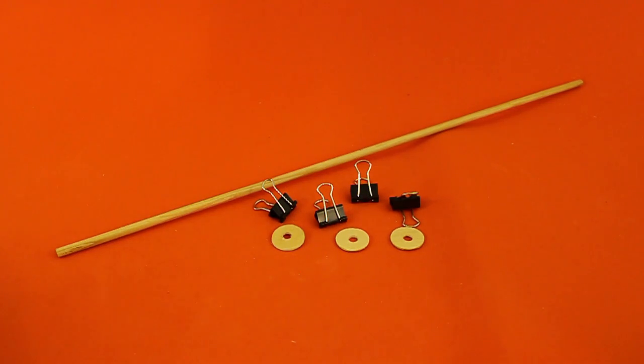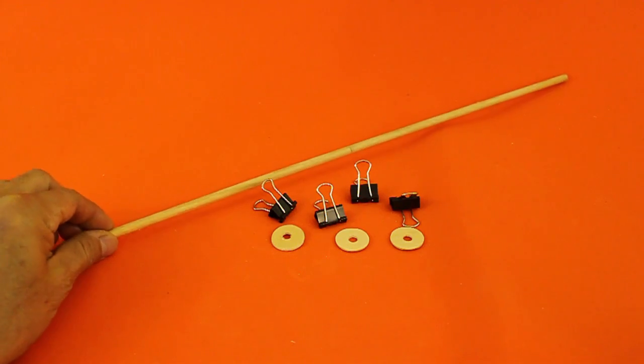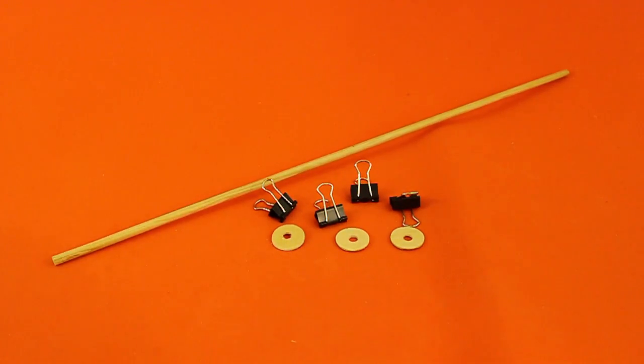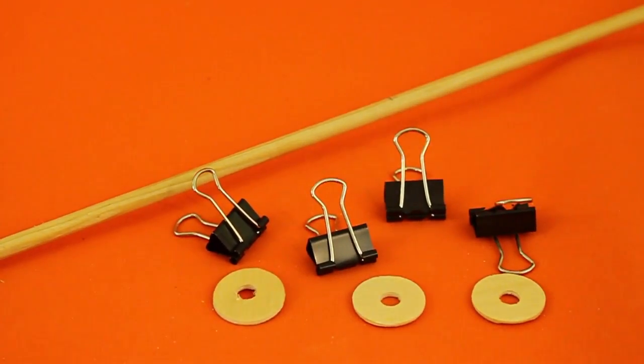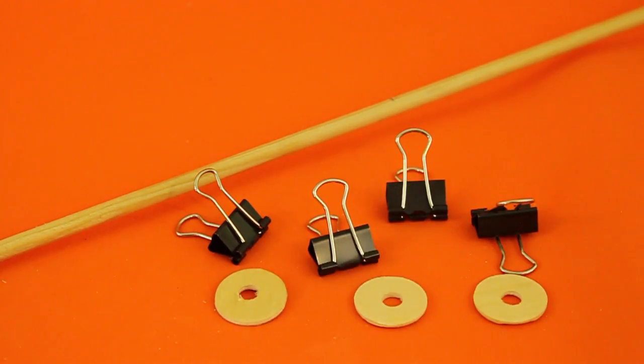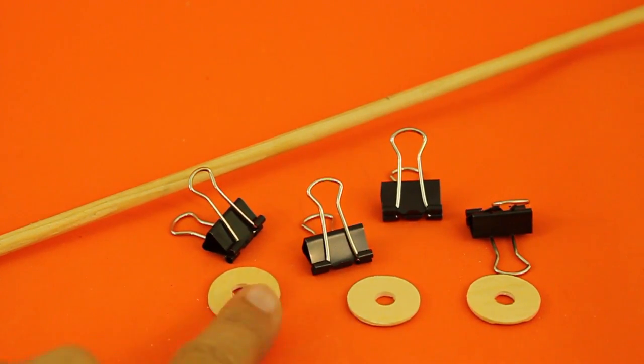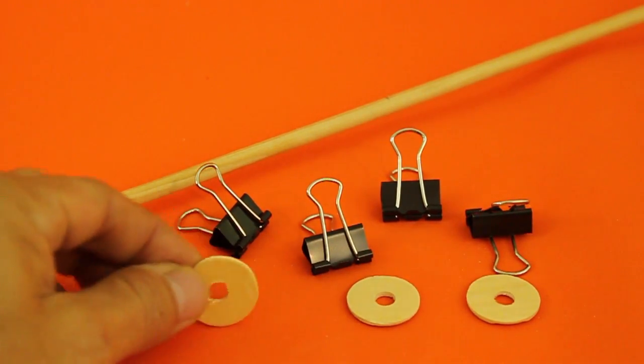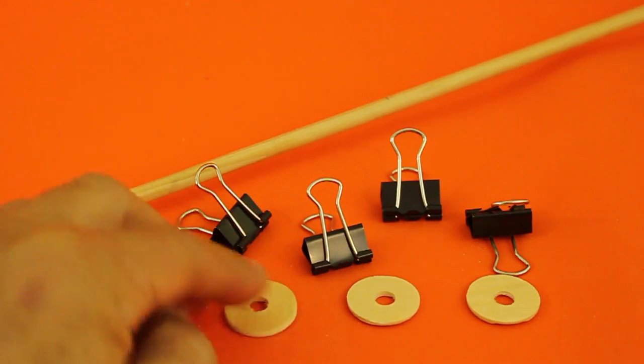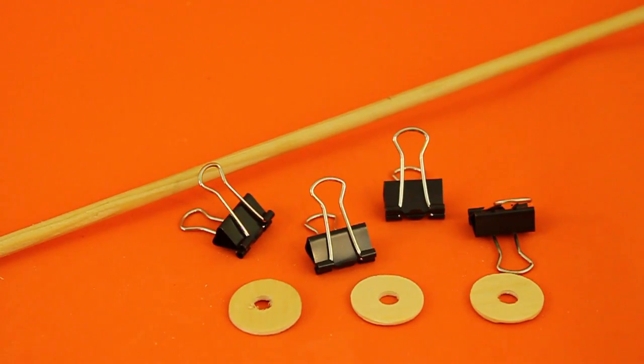We need a wooden dowel, some 40 cm in length, 4 bending clips and 3 washers. This can be made of wood like mine but they can also be metal washers.